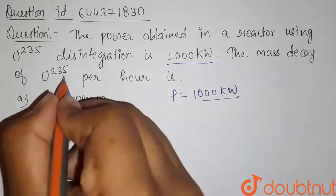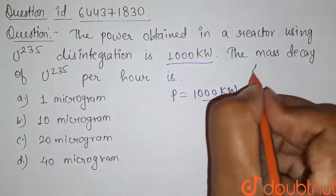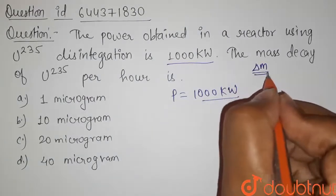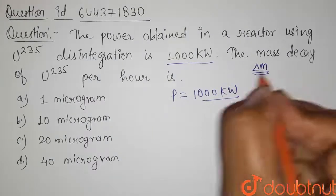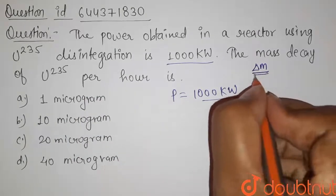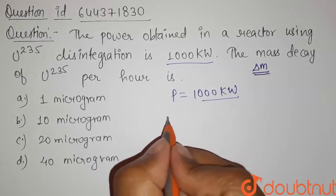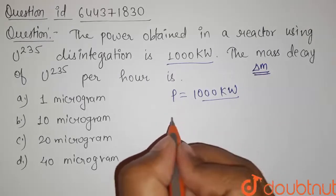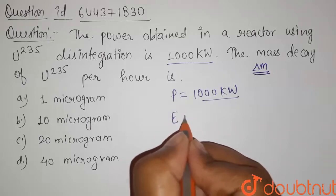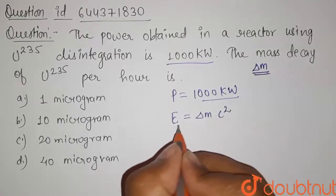The mass decay of U-235 per hour. So we have to find the mass decay, delta m, or we can call it mass defect, in one hour. This mass decay, delta m, can be found by using the energy-mass equivalence relation, which is given by energy equals delta m times c squared.